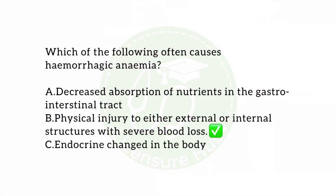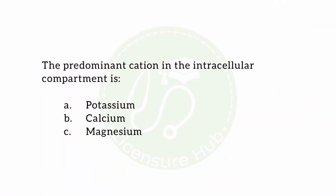Back to the question — it was asking about the causes of hemorrhagic anemia. Option B, which states physical injury to either external or internal structures with severe blood loss, is the appropriate answer. This is because it is accompanied by severe blood loss, which classically explains severe bleeding or hemorrhage.